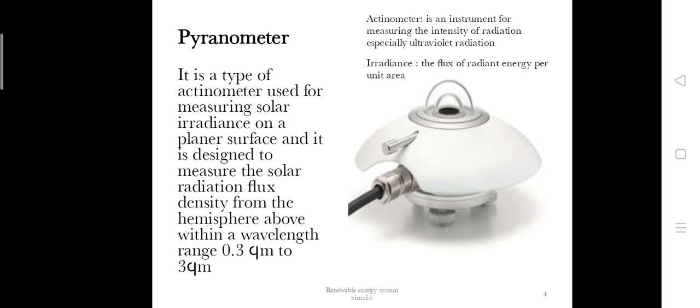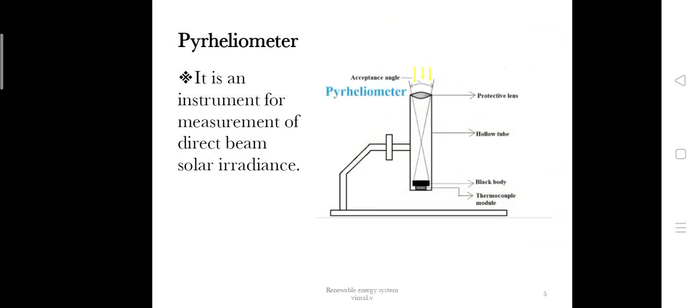A pyrheliometer is an instrument for measuring the intensity of radiation, especially ultraviolet radiation—the flux of radiant energy per unit area. We can understand the pyranometer more deeply by seeing its applications. It is an instrument which observes direct beam solar irradiance.